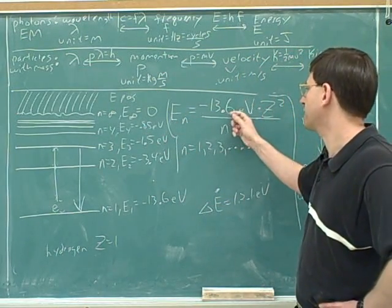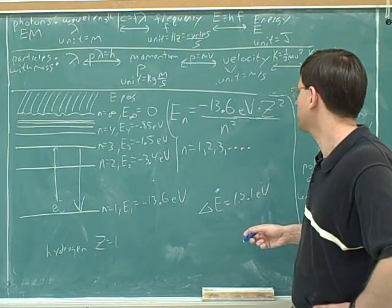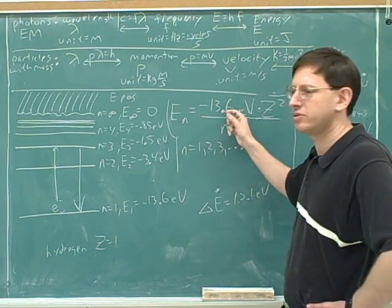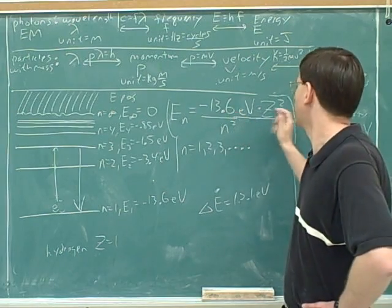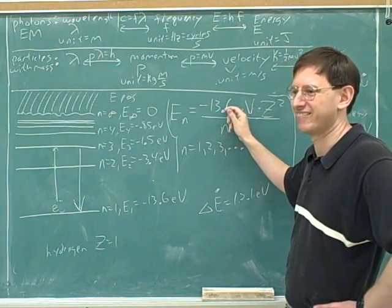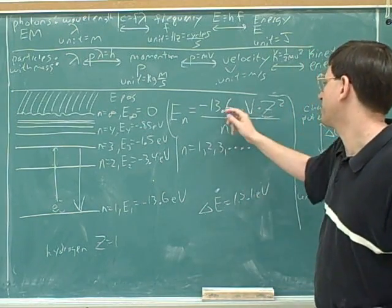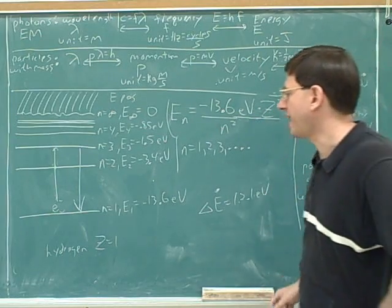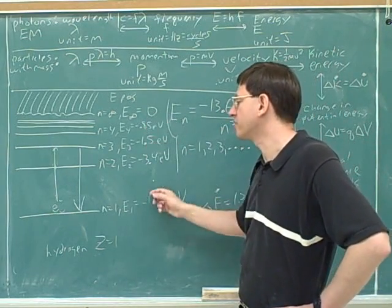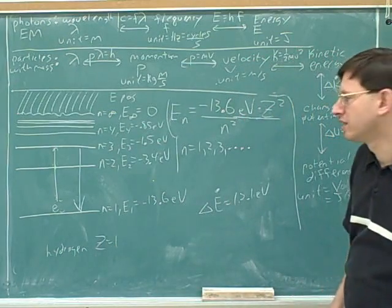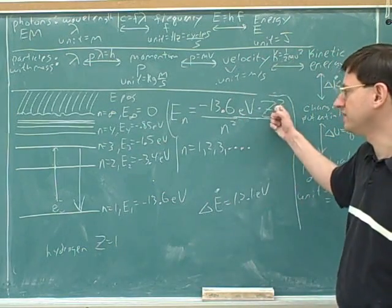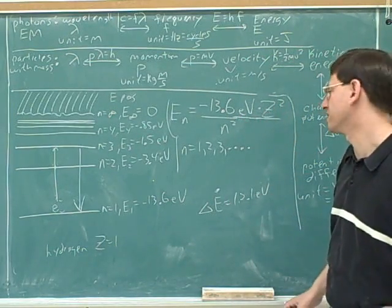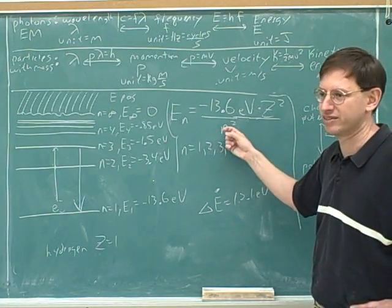So the ground state is only 13.6 for hydrogen. Say for helium, it would be 27.2? No, it would be 4 times 13.6. So for helium, it would be 13.6 times 2 squared. So that's the other point I wanted to make. All of these numbers are only when Z equals 1. So 13.6 times Z squared equals the ground state energy? That's right. Because for the ground state, you would plug in 1 for n.